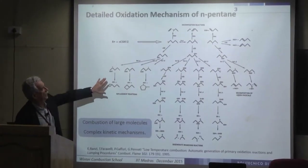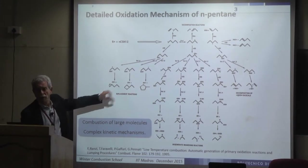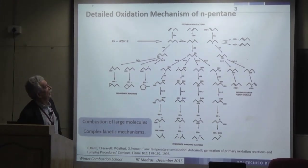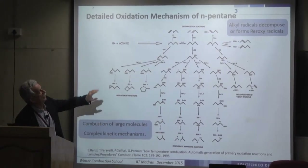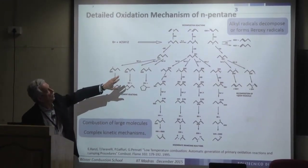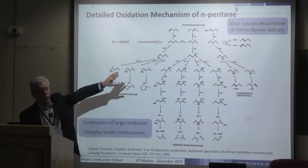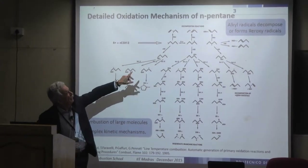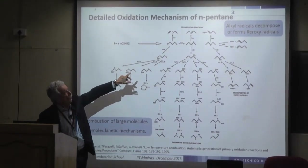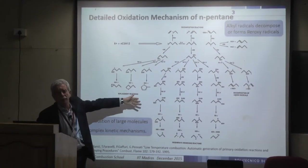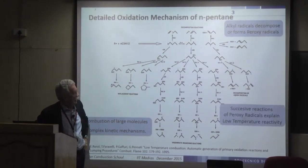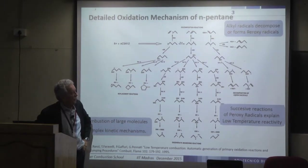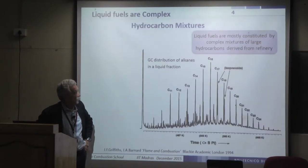The complexity of the mechanism has already been discussed: the mechanism is very complex. Alkyl radicals decompose at high temperature, while at low temperature they undergo peroxy radical formation, and the successive reactions of the peroxy radical explain low temperature reactivity.